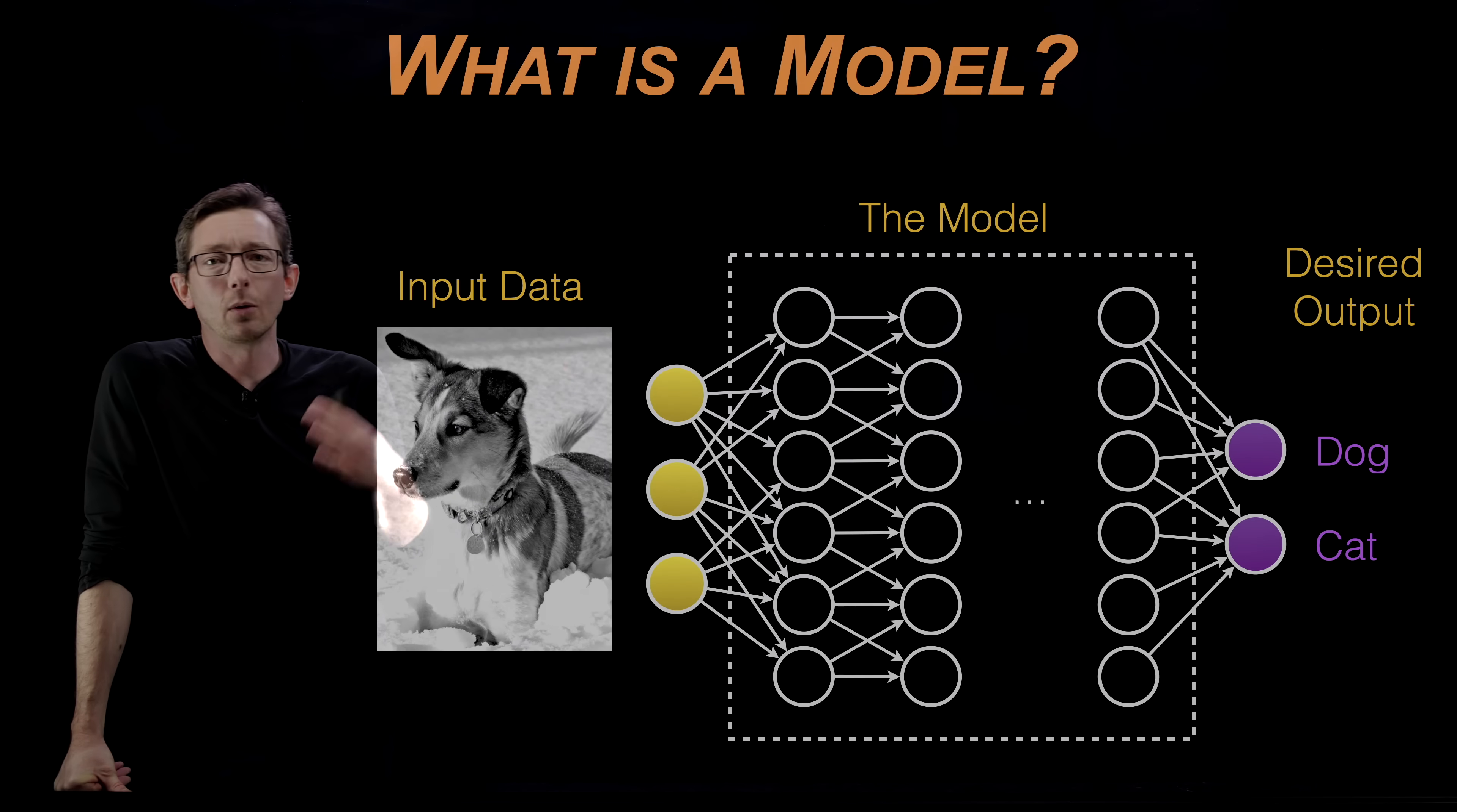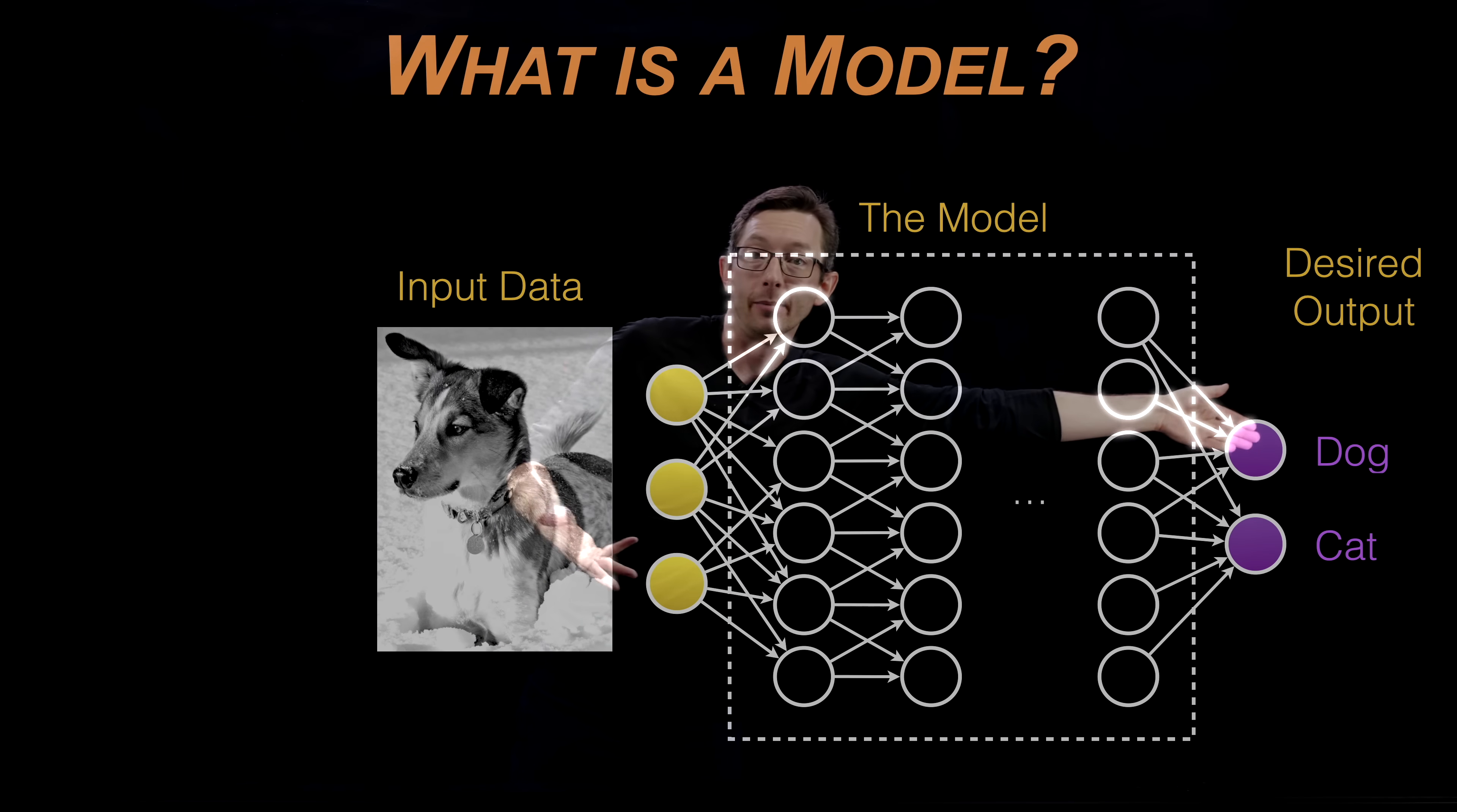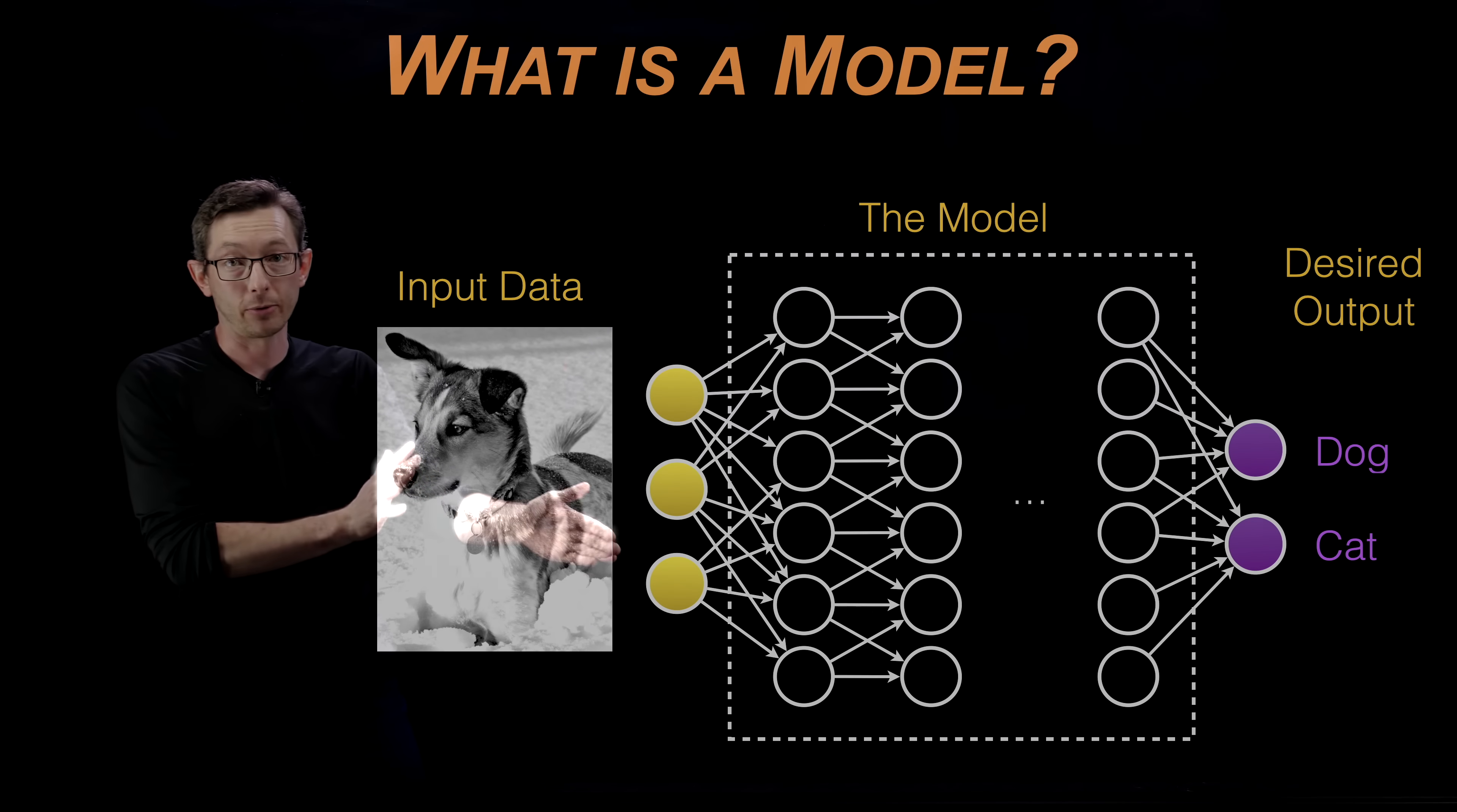So what is a model? I said that machine learning is a process of building models from data. A model is essentially a function that takes in input data and there are some output values that humans care about. The inner guts of how that function evaluates that input-output model, there's a million different ways you could represent that model in a computer, in a program, as a function. But at the end of the day, it's an input-output program.